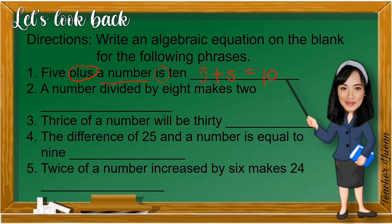Number 2, a number divided by 8 makes 2. We can use any letter from the alphabet. Divided by 8 makes - makes pertaining to equal sign. So, X divided by 8 is equal to 2. Or, we can also write this using fraction bar x over 8 is equal to 2.